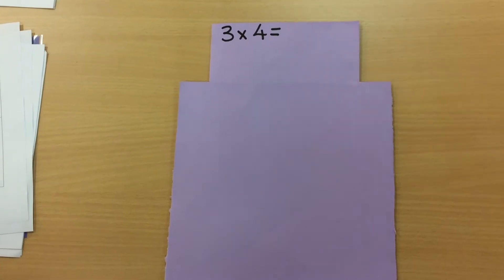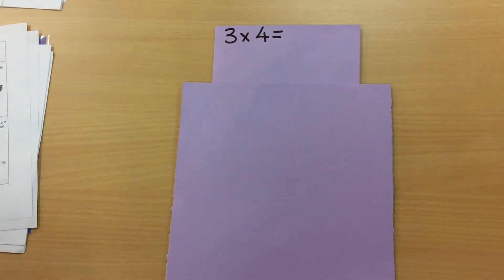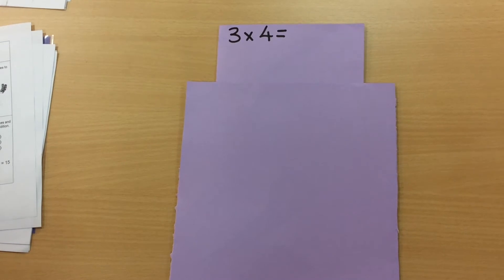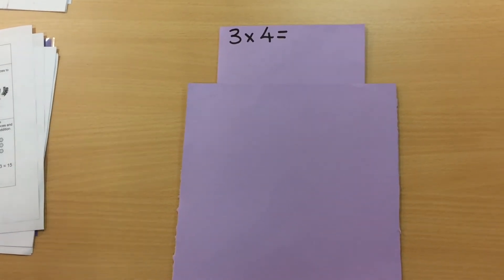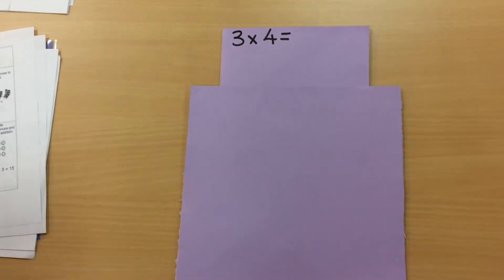In year two multiplication, we start to look at arrays. This helps children visualize and see that they are groups and lots of. It also helps them find the answers to multiplication and recognize that multiplication is commutative and can be done in both ways. So let's take 3 × 4 for example.